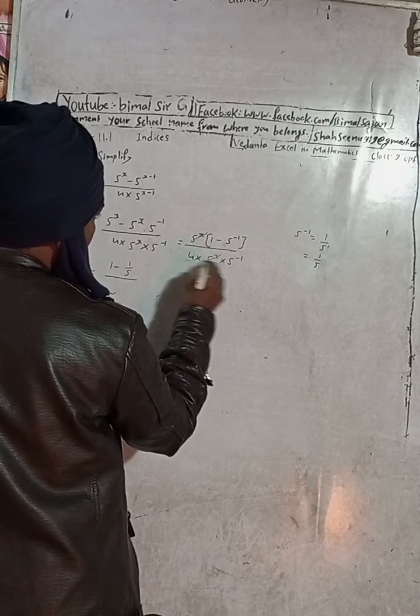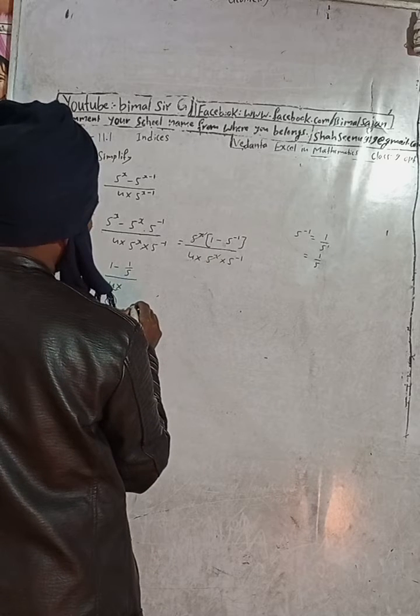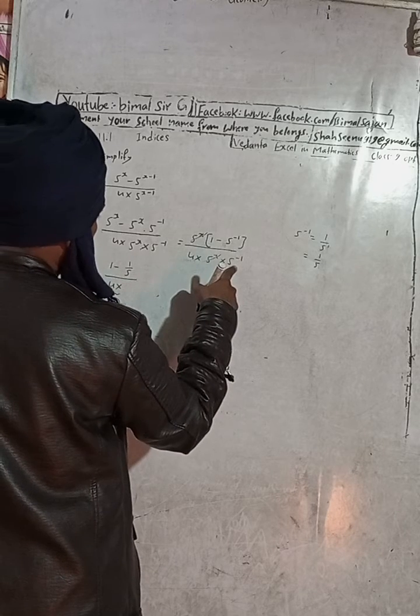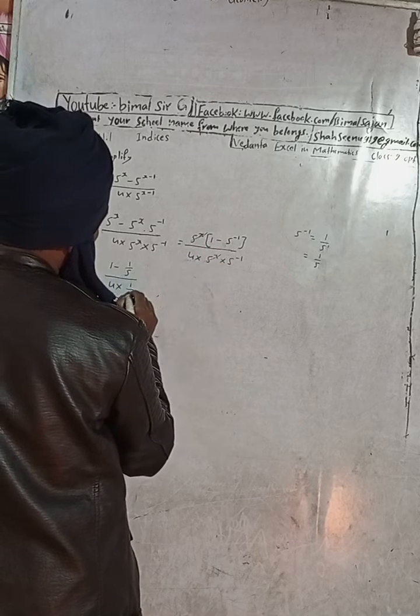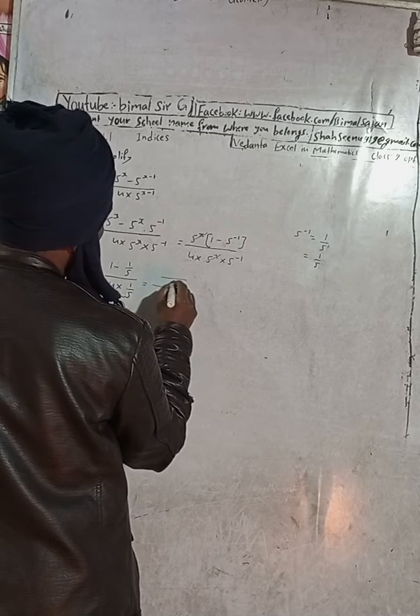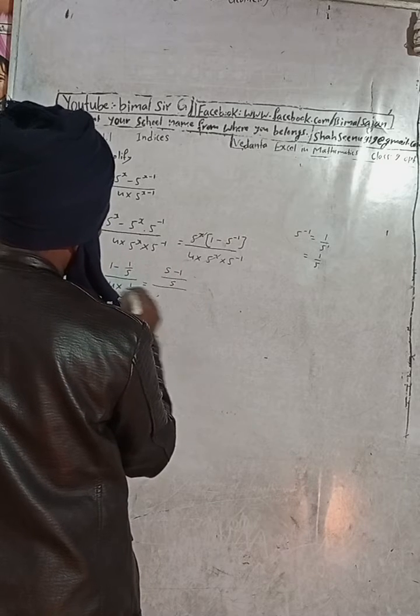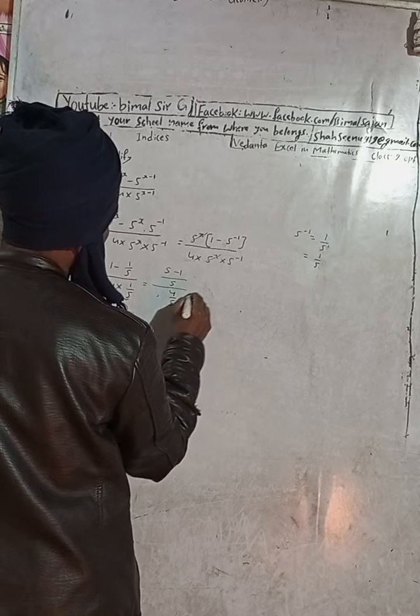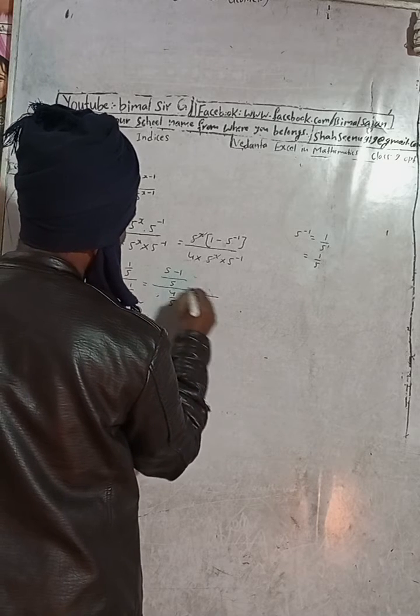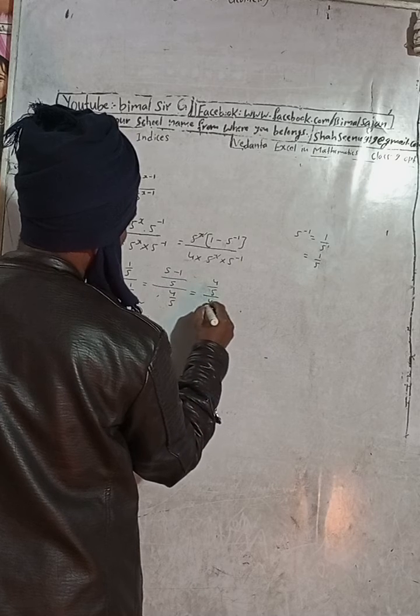And then this is here 4 into, can be written as 1 by 5. So this is the difference, 5 minus 1, and this is 4 by 5. So now this is here 4 by 5, and this here 4 by 5.